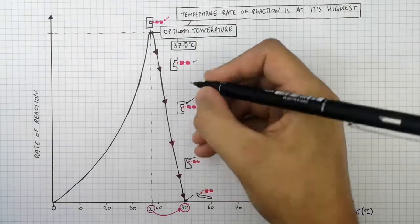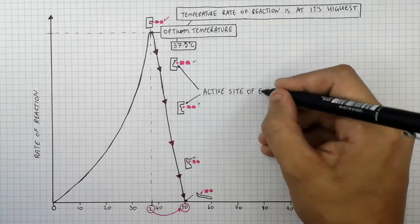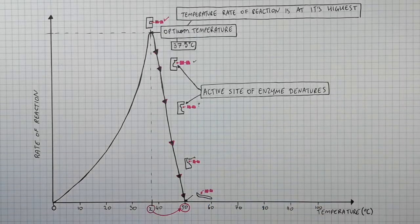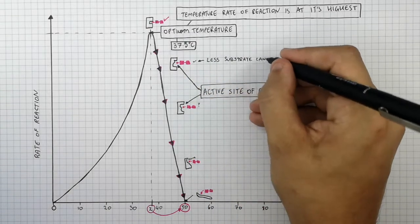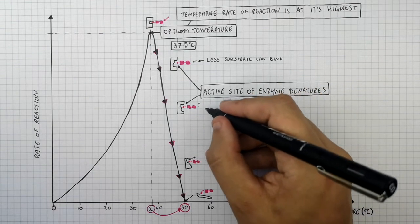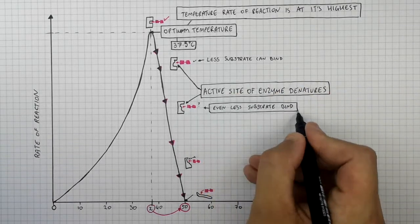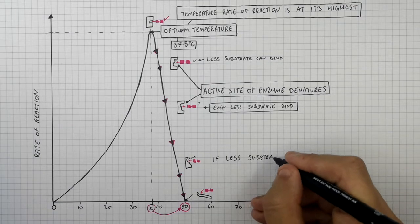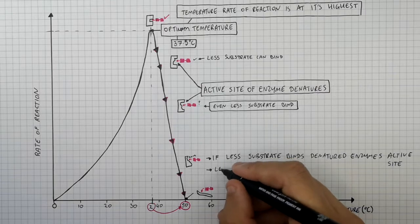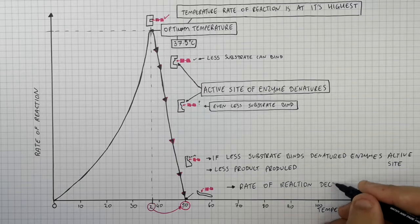As you increase the temperature above the optimum, the active site of the enzyme denatures — it changes shape. Therefore, less substrate can bind the active site of the enzyme. If less substrate binds the denatured enzyme's active site, that means less product is produced, which means the rate of reaction decreases.